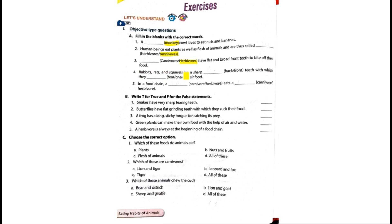Rabbits, rats and squirrels have sharp front teeth with which they gnaw their food.